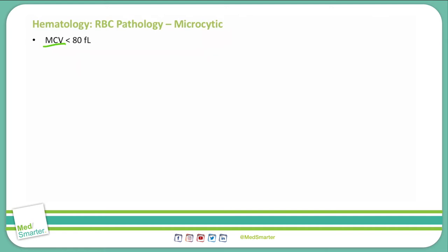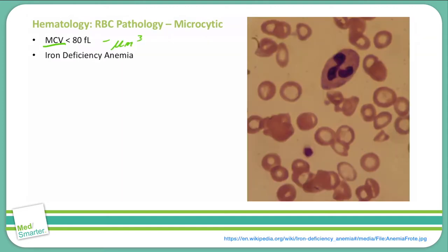As a side note, a femtoliter is the same as a cubic micrometer. The first microcytic anemia we will discuss today is iron deficiency anemia. As you can see in this photo to the right, iron deficiency anemia has a red blood cell with central pallor due to the decrease in iron and the decrease in the volume of the red blood cell.